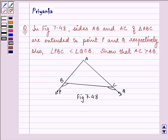Now this is figure 7.48 which we need to refer. We are given that this angle is less than this angle. Let us name these angles as angle 1, angle 2, angle 3, and angle 4.